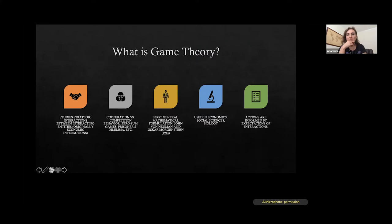The first general mathematical formulation was done by John von Neumann and Oscar Morgenstern in 1944, and it has been widely used in economics, in social sciences, in biology. The gist of using game theory is that the actions are usually informed by expectations and interactions, and they can be applied to pretty much any life forms that we can think of.